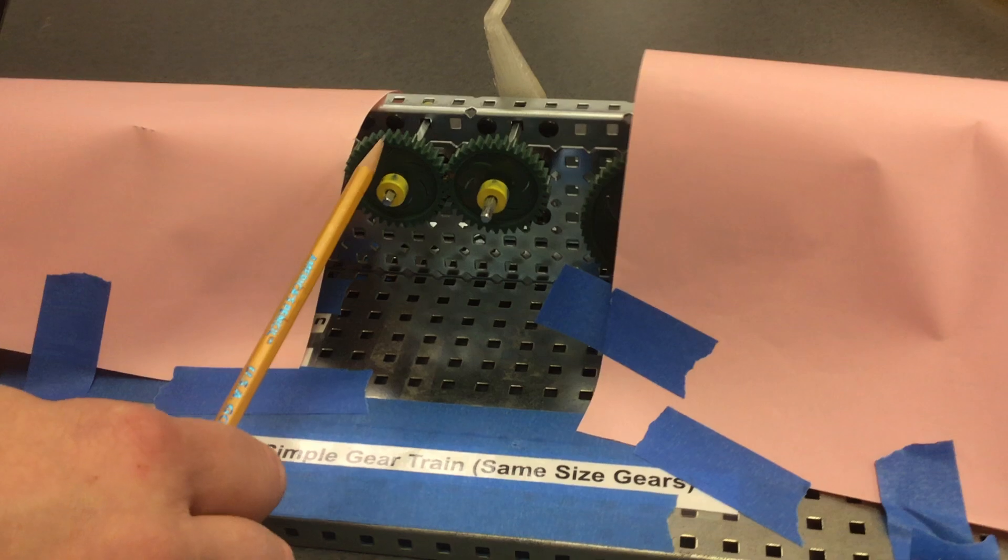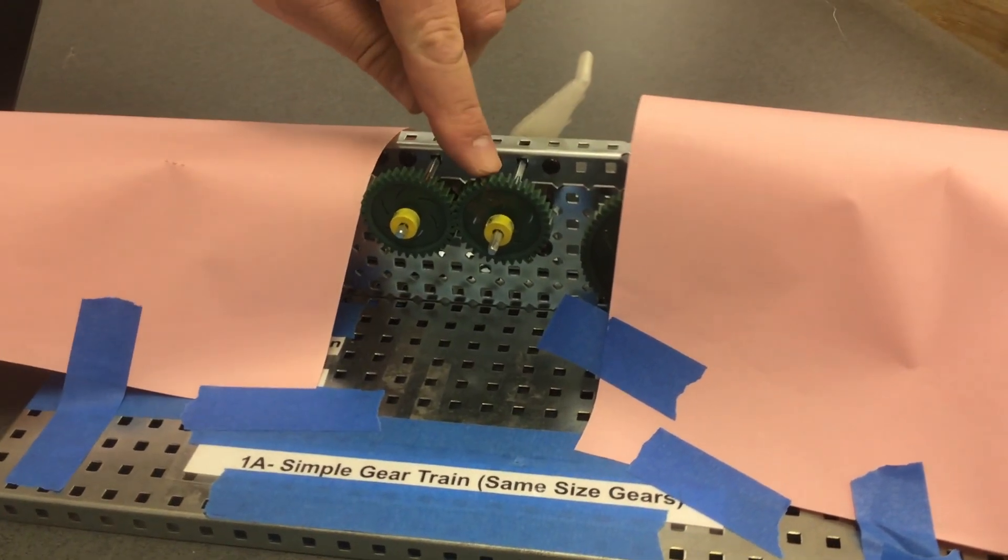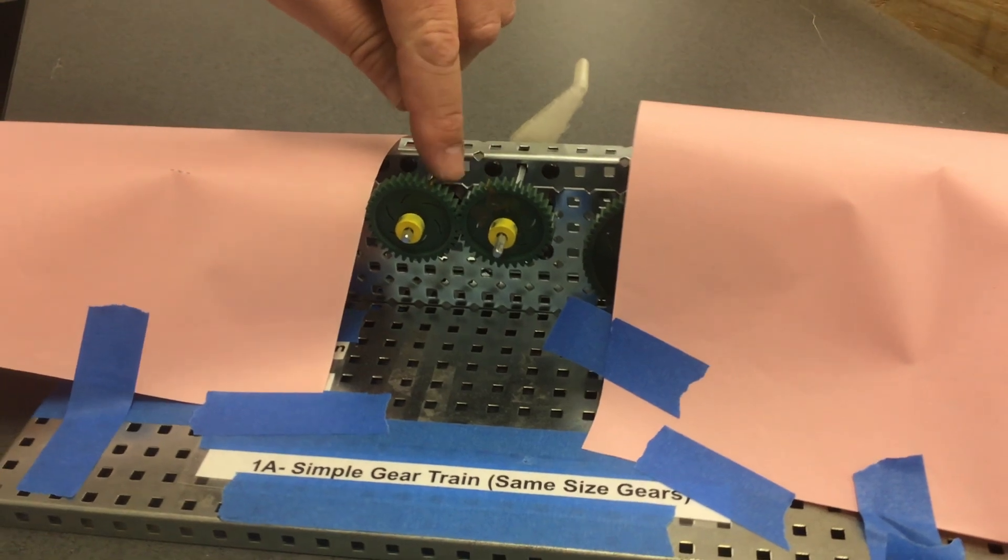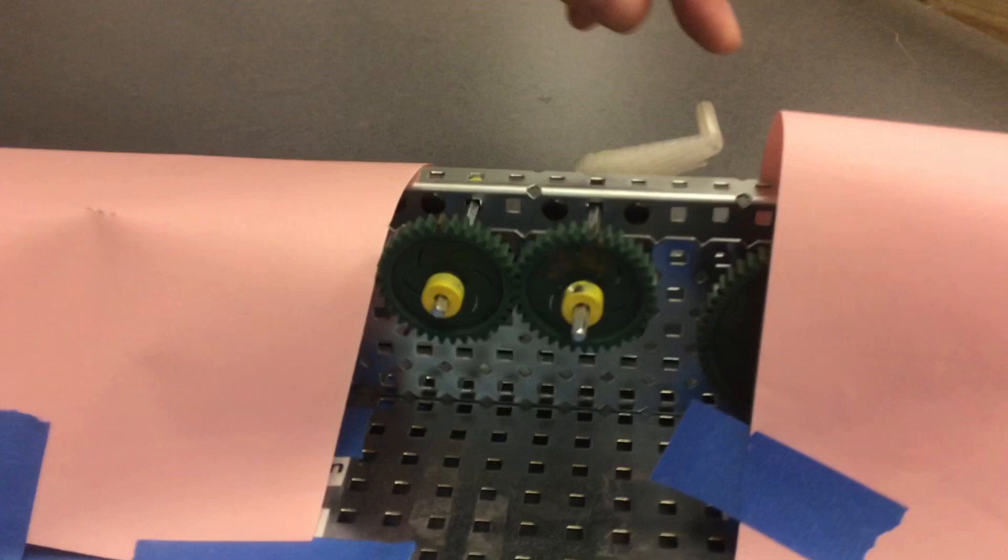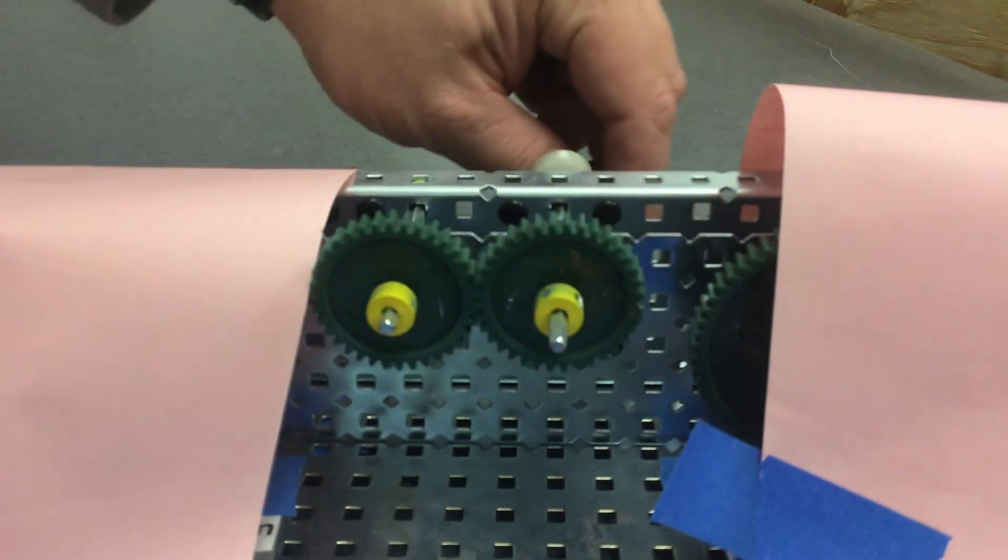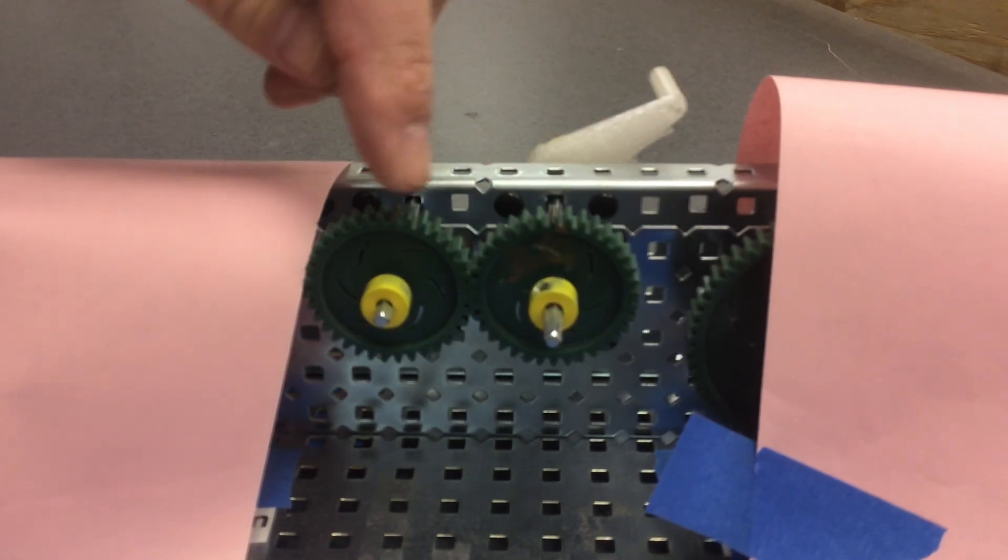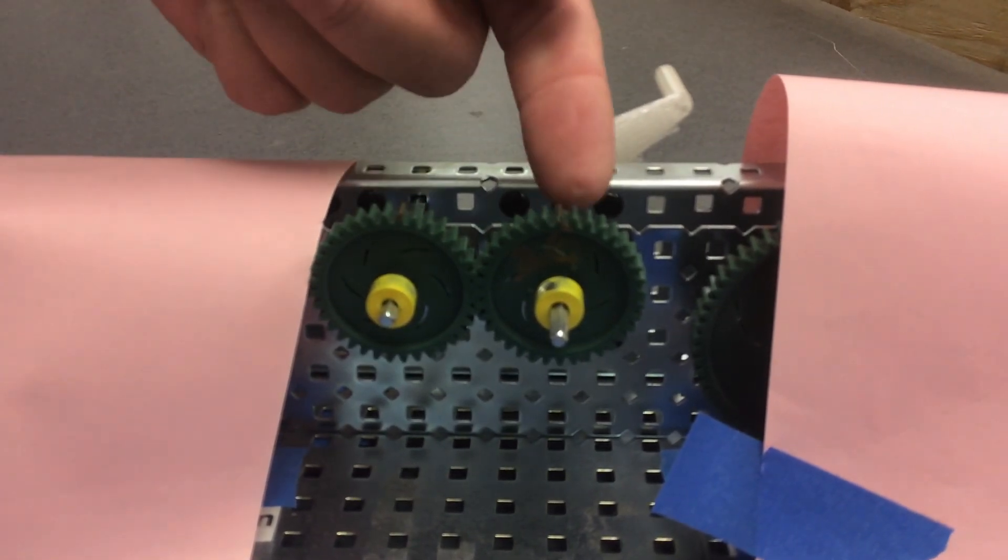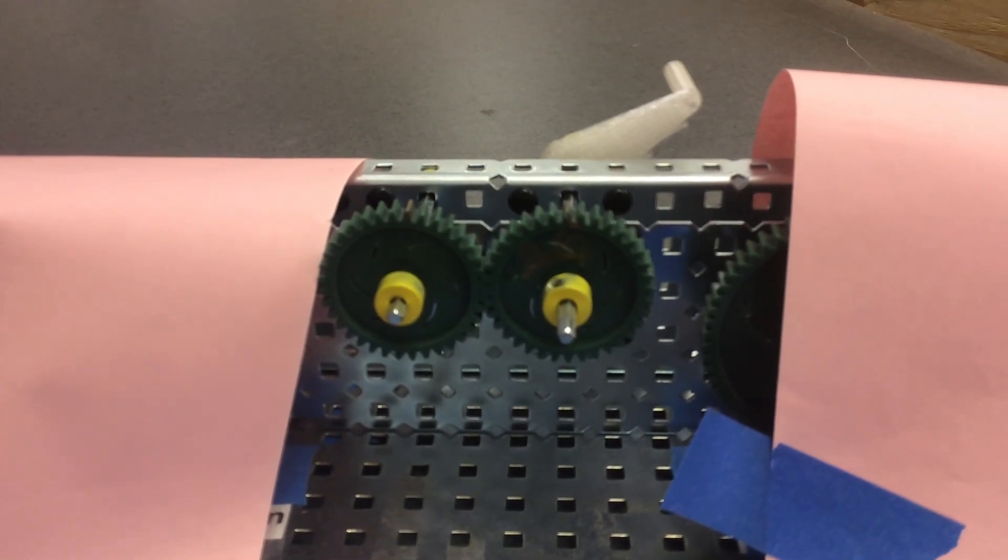The gears are the same size and on the gear we have put a small mark. When we match those marks up to the top, if I turn them one full rotation, they're both at the top again. That is a one to one ratio because they are the same size.